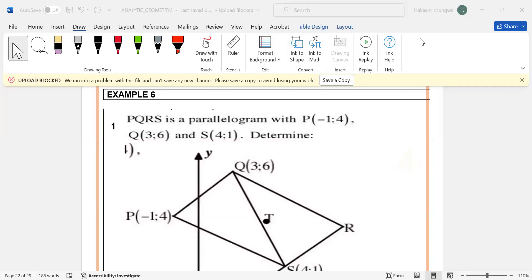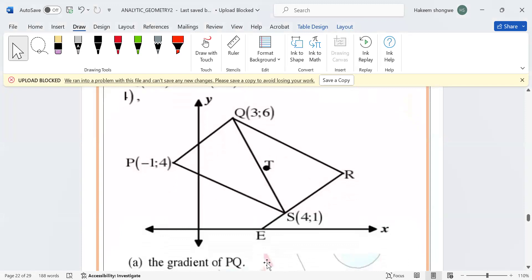Example number six: you're given a diagram and they say determine the gradient of PQ. So if you check, this is your P and this is your Q. This line here is not vertical, it's a slant, meaning that our gradient is not going to be undefined.